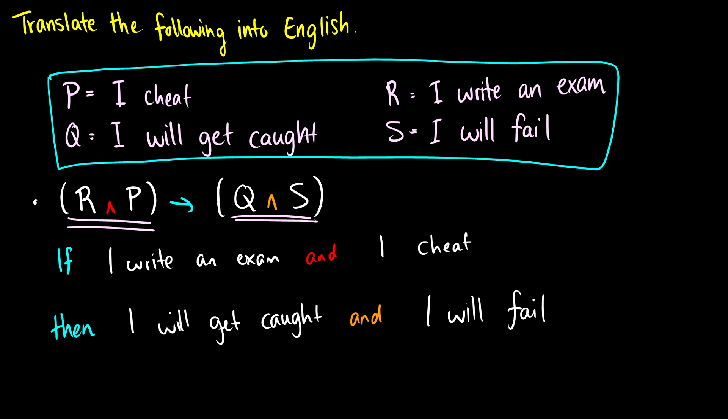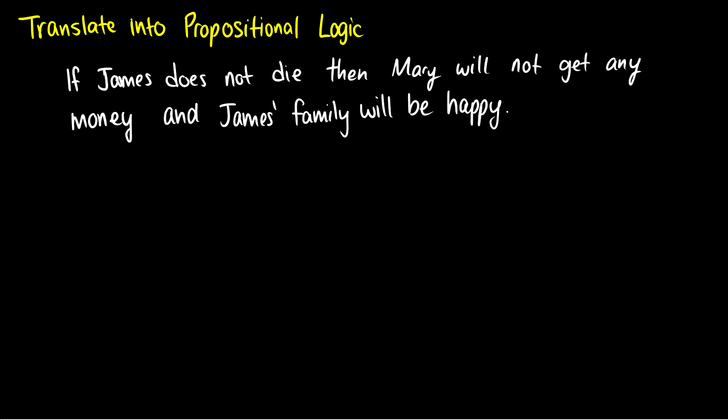Now that we've done a well-formed formula into English, let's do English into a well-formed formula. So I have this sentence here. If James does not die, then Mary will not get any money, and James' family will be happy. So the first thing I kind of want to do is look at all the connectives. So the first thing I see here is an if-then statement. So I'm going to rewrite this if and then in light blue, which means at some point we're going to need an arrow. If James does not die, oh, I see a not in here, so let me put that in red. Then Mary will not get any money. I see another not there. That is another connective. And, oh, there's an and, so let's do and in orange. James' family will be happy.